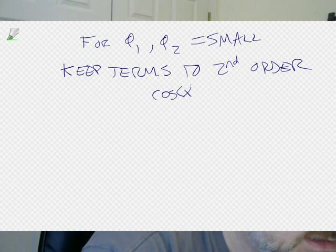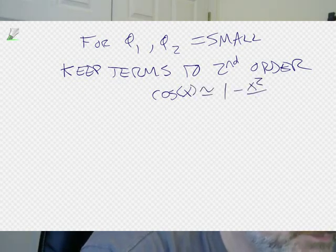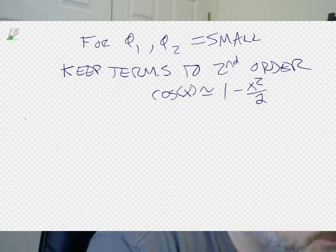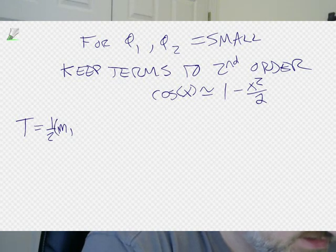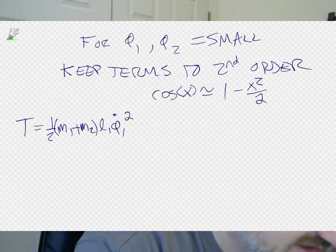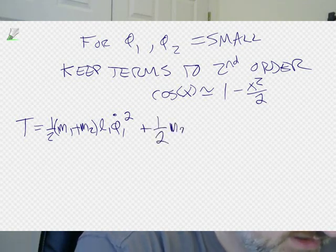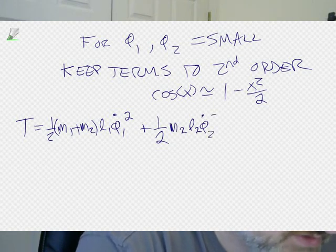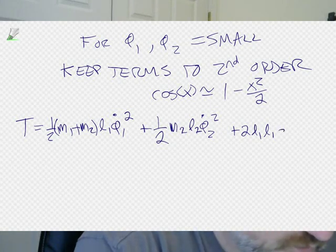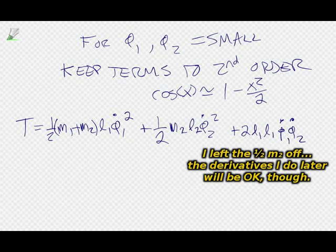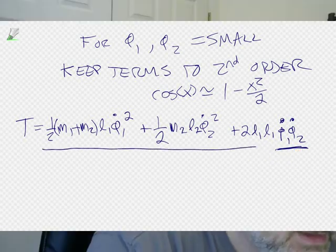Recall that cosine(x) to second order is approximately 1 minus x²/2. In the kinetic energy, the first terms are already second order and just sit there. Combining the first two terms gives (1/2)(M1+M2)*L1²*phi1-dot² plus (1/2)*M2*L2²*phi2-dot². For the cross term M2*L1*L2*phi1-dot*phi2-dot, we're already at second order so we keep only the '1' from the cosine expansion. The kinetic energy is now much simpler.